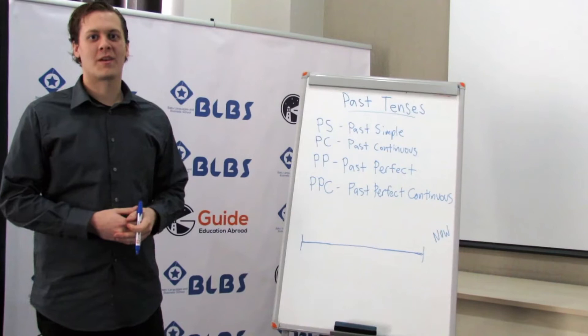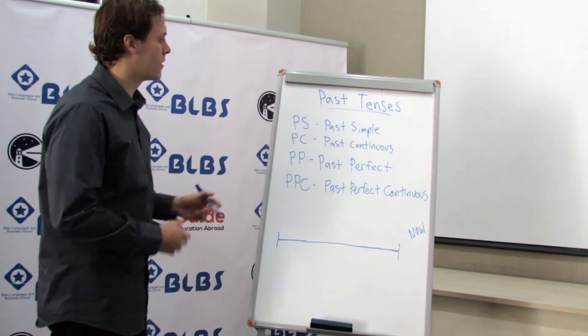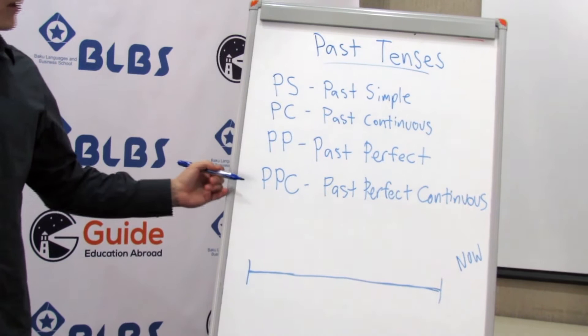Now we're going to learn how to use the proper tenses for telling our story. We have the past simple, past continuous, past perfect, and past perfect continuous.